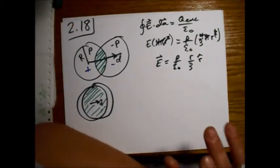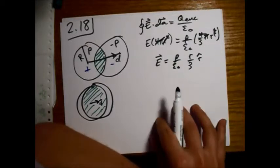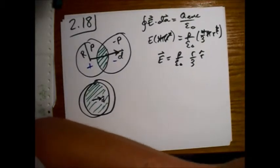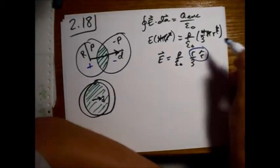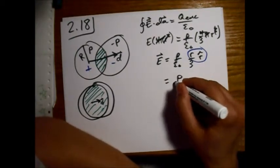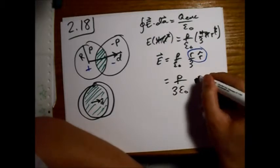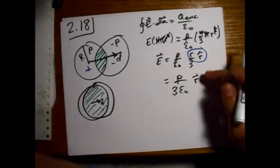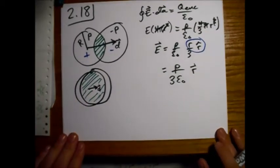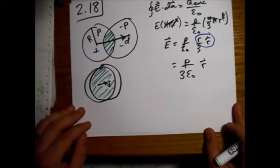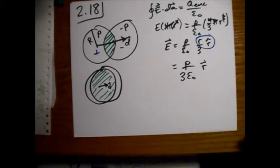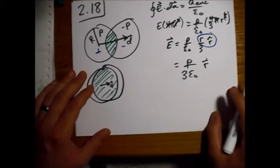So one little shortcut we'll use for this problem is we're going to group together this R, R hat right here. So we have a rho over 3 epsilon naught, and these group together just to be R vector. All right, so we'll do this a little bit more fully by using a coordinate system, and then we'll just do it real quick without a coordinate system.